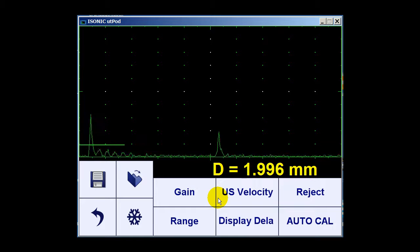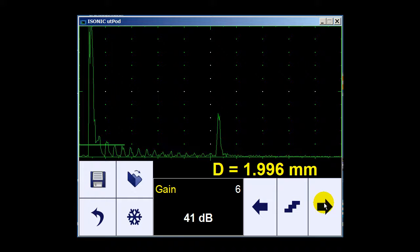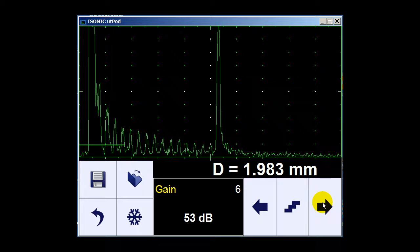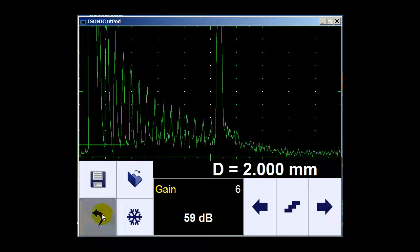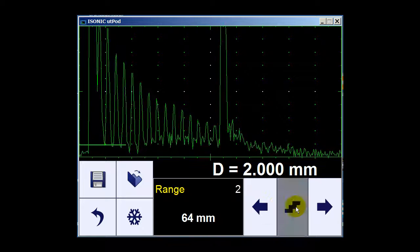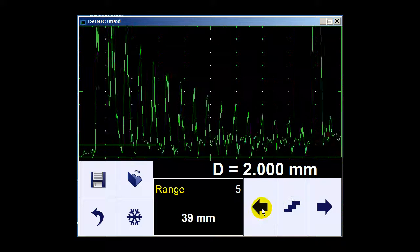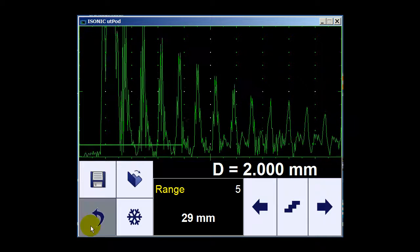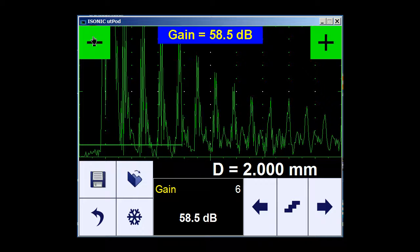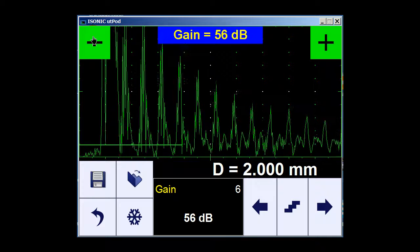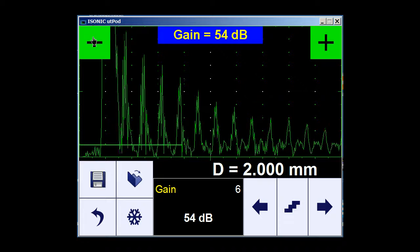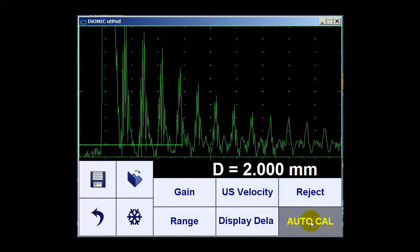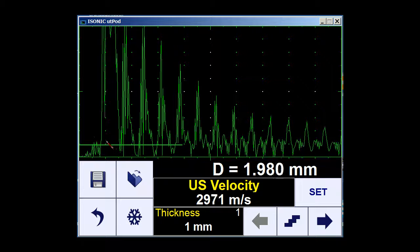So I have a 2mm calibration block here and I need to increase the gain so that it is properly seen. Also, the range I need to decrease here because I see too many indications on the screen. And again I will adjust a bit more. So now AutoCal can start.